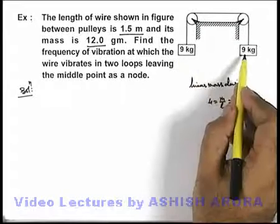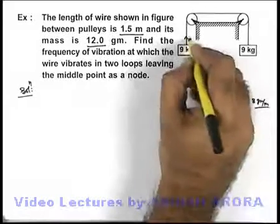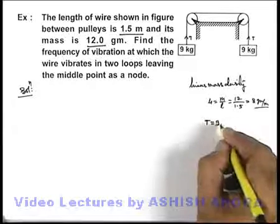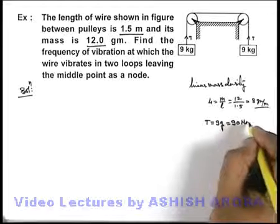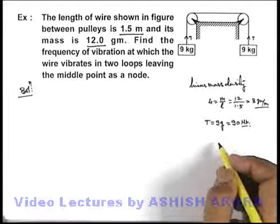And as the weights of 9 kg blocks are hanging, so if tension in the string is T, we can write tension in the string will be equal to 9g, that can be taken as 90 newtons. Here we can take g to be approximately 10 meters per second squared.